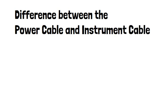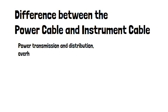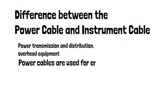1. Power cable is used for power transmission and distribution, overhead equipment, and other high power applications, whereas instrument cable is used for industrial automation and other signal control applications.